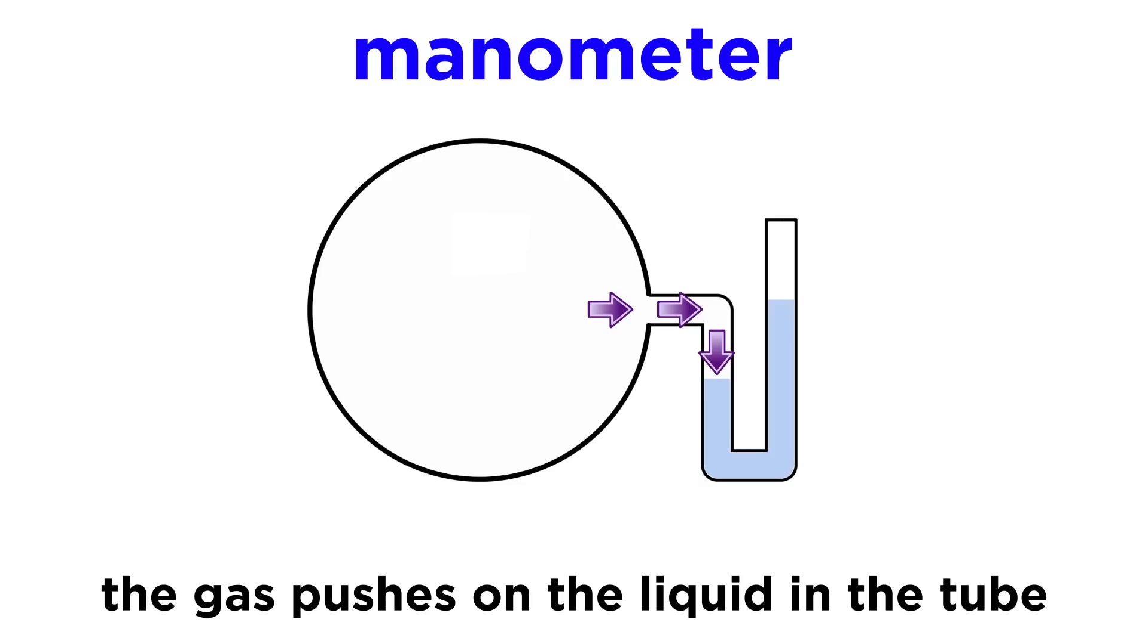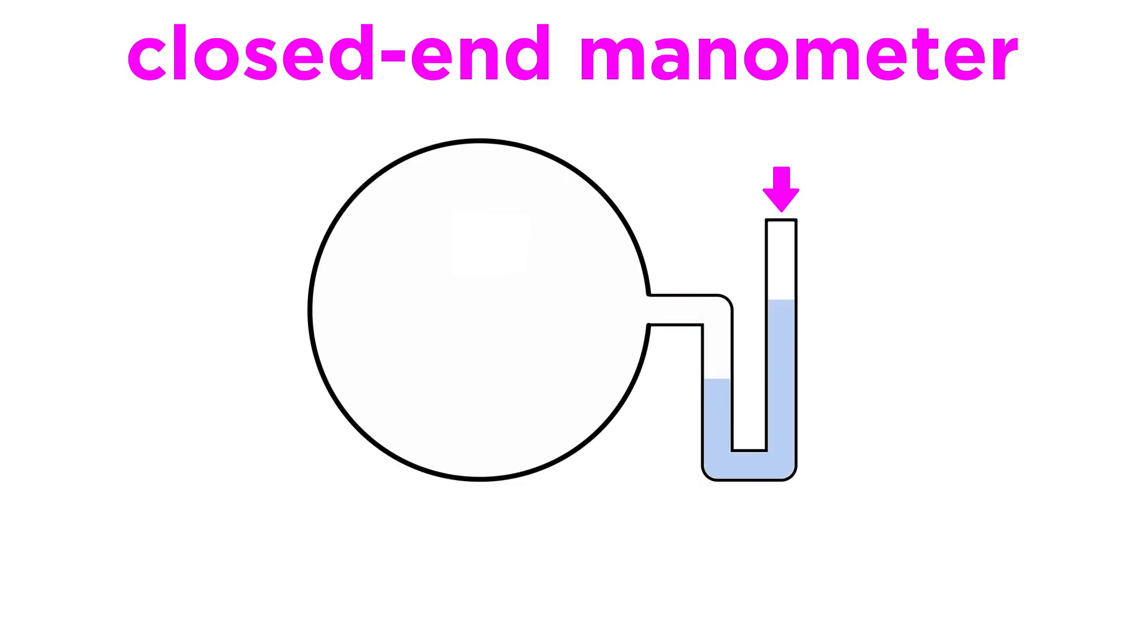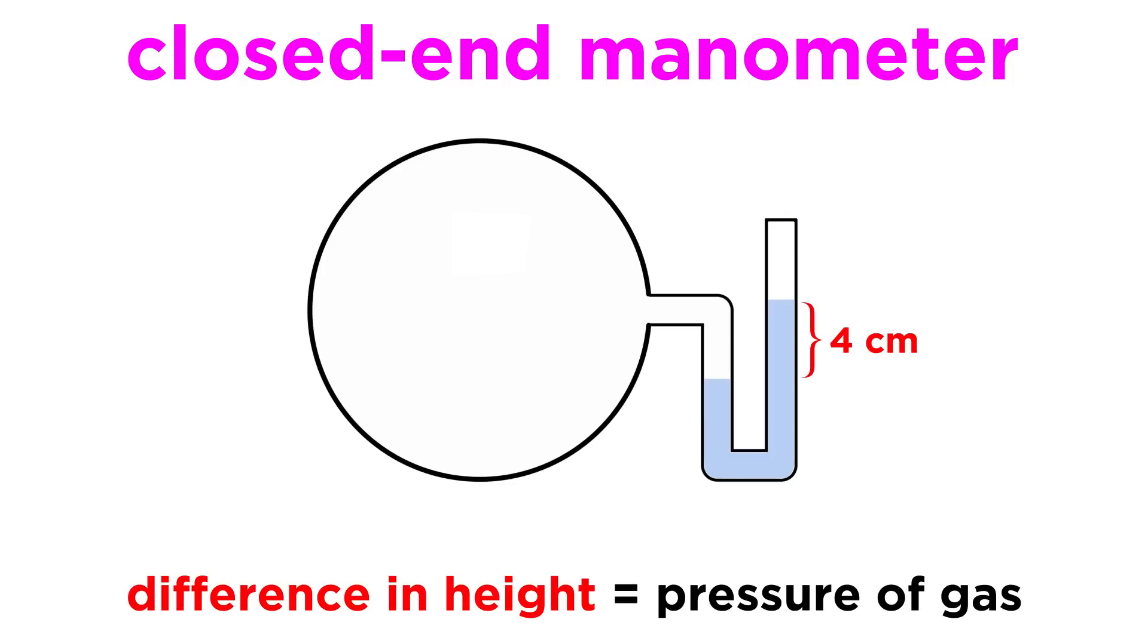And the gas particles in the bulb will push down on the liquid just the way atmospheric particles push down on the liquid in a barometer. This tube can be closed to the atmosphere, in which case the difference in height between the two arms of the liquid will be equal to the pressure of the gas. This is called a closed-end manometer.